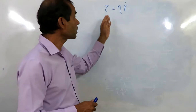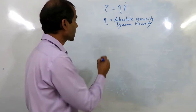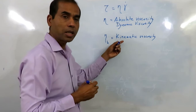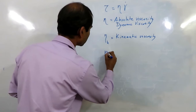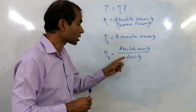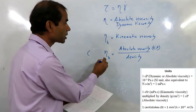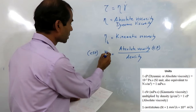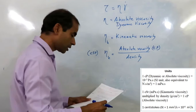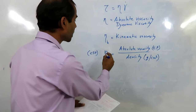The viscosity defined by this formula is known as absolute viscosity or dynamic viscosity. There is another type of viscosity known as kinematic viscosity. The kinematic viscosity is given as absolute viscosity divided by the density of the liquid. The units for absolute viscosity are centipoise, and when absolute viscosity is in centipoise and density is in grams per centimeter cube, we can find out the kinematic viscosity in centistokes. One centistroke is equal to one millimeter squared per second.